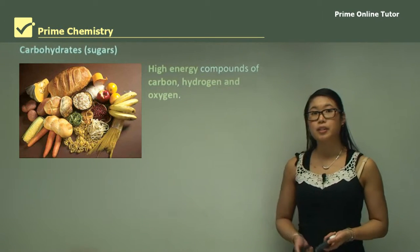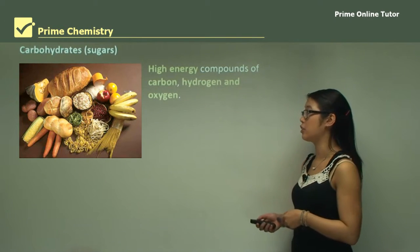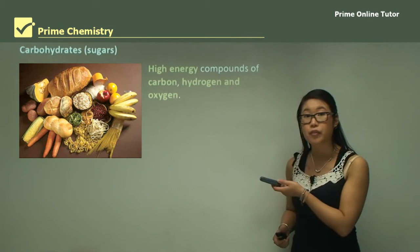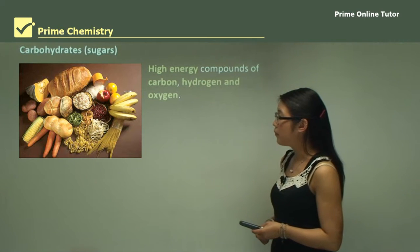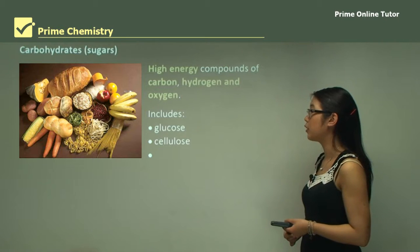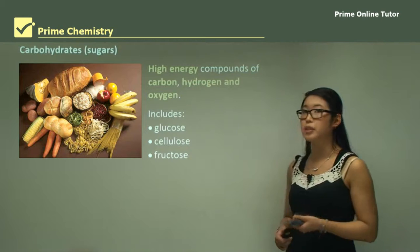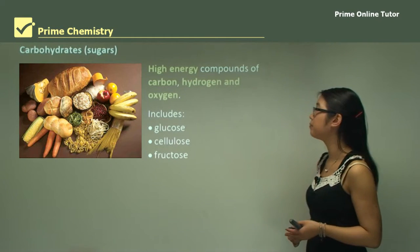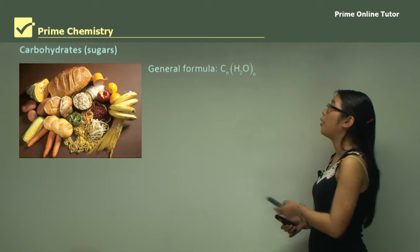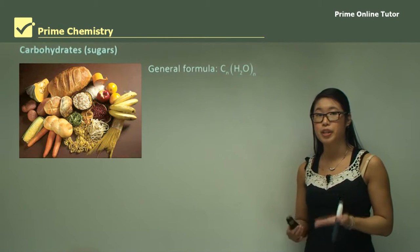Carbohydrates are also known as sugars and they are high energy compounds of carbon, hydrogen, and oxygen. They include a variety of different sources like breads and bananas, which also contain sugars. They include glucose as a sugar, cellulose which is a structural component of plants, and fructose which gives that sweet taste. The general formula for carbohydrates is (CH2O)n, where n is determined by how many carbon chains we have.